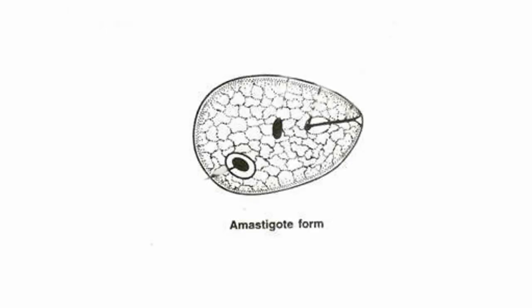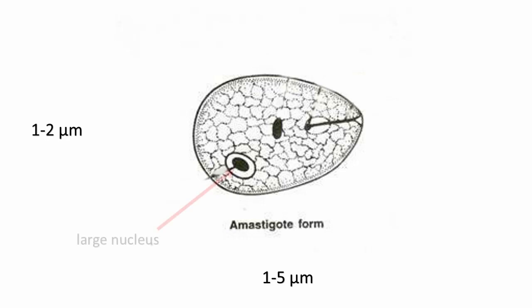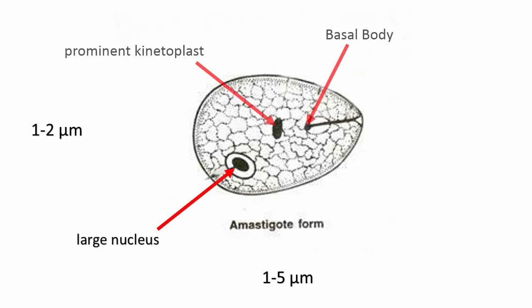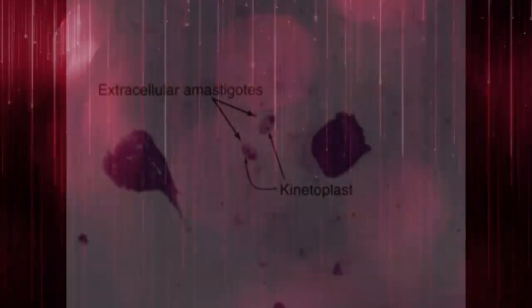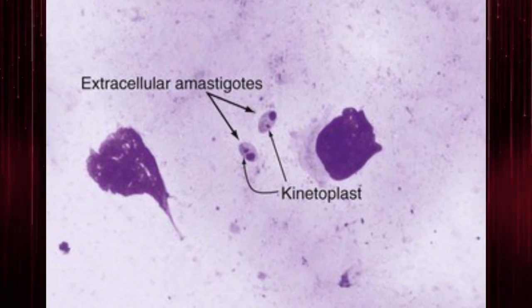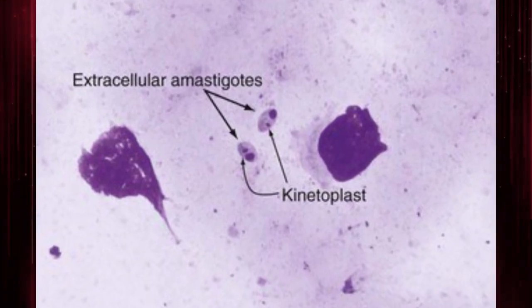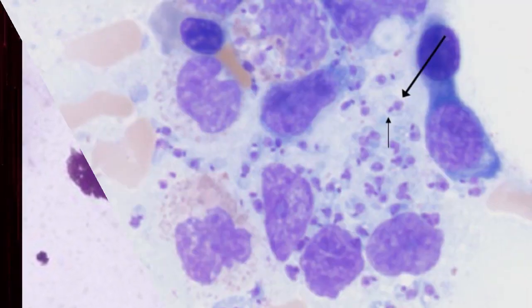Amastigotes of Leishmania are spherical to ovoid, and measure 1 to 5 micrometers long by 1 to 2 micrometers wide. They possess a large nucleus, a prominent kinetoplast, and a short axoneme, the last of which is rarely visible by light microscopy. The organisms reside in macrophages of the host and can be found throughout the body.